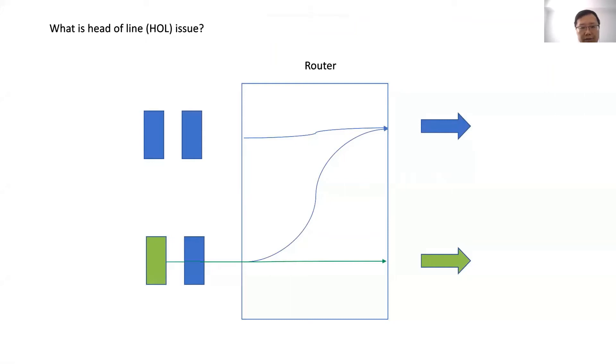What is the head-of-line issue? In networking, the head-of-line issue is a performance problem of networks.